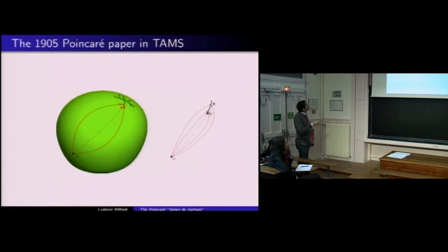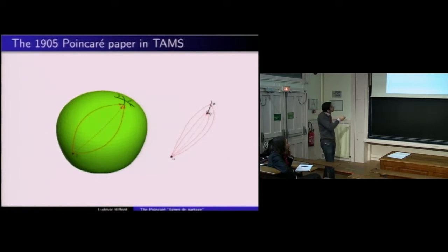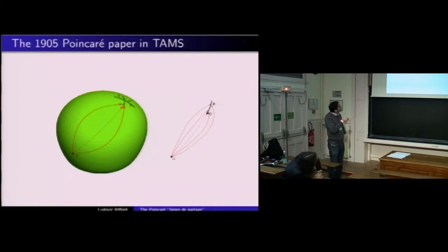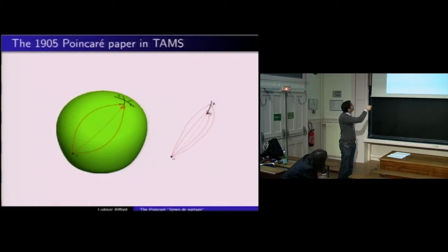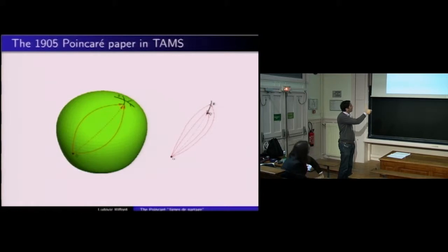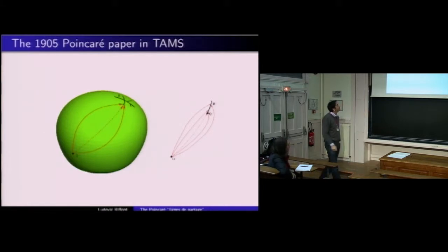Voilà la surface. Ce qui est représenté en noir, c'est l'ensemble des lignes de partage, avec un point O fixé. Pour chaque point de l'ensemble noir, il existe deux courbes géodésiques minimisantes entre O et ce point. Poincaré nous dit que cet ensemble ne divise pas la surface en deux composantes — je peux toujours construire une courbe entre deux points hors de l'ensemble noir en passant par O, en prenant des géodésiques minimisantes qui ne passent pas par les lignes de partage.